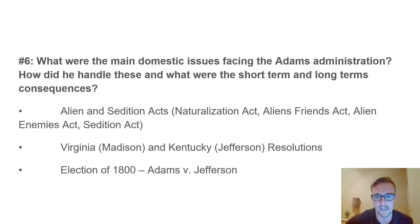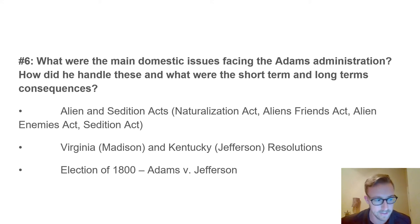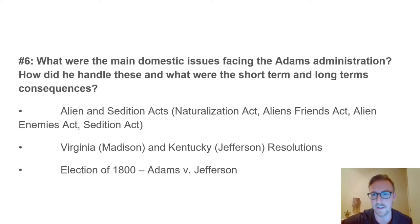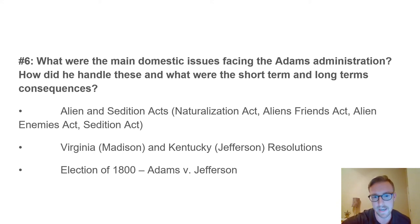Jefferson's response was controversial: in Kentucky, Jefferson supported and helped push through a resolution—and Madison did the same in Virginia—stating that a state does not have to obey the federal government if it passes a law that violates the Constitution. Even if the federal government passes a bill signed by the president, the state is not obligated to obey it if it deems it unconstitutional. The Kentucky and Virginia Resolutions presented an incredibly controversial political theory that states could refuse to comply.